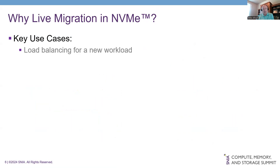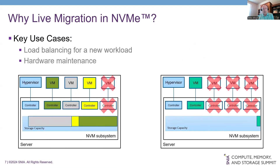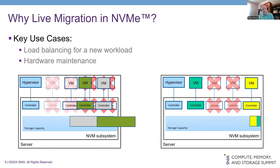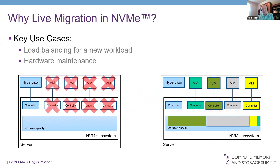Another use case is normal hardware maintenance. In a deployment with virtual machines distributed across two servers, if the server on the left requires maintenance and we need to bring it down, just like with the new workload case, you can take a VM and start migrating it off the left server over to another server. We want live migration to be scalable, so we're developing it such that you can do multiple migrations at the same time, freeing you to migrate all of the VMs to anywhere you want on the server on the right.